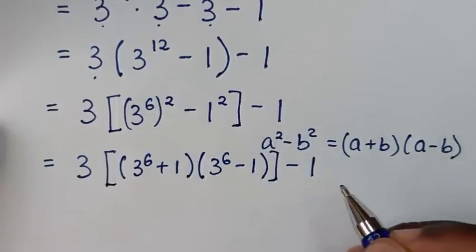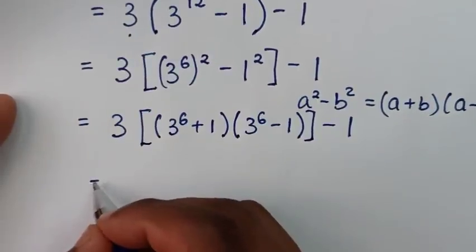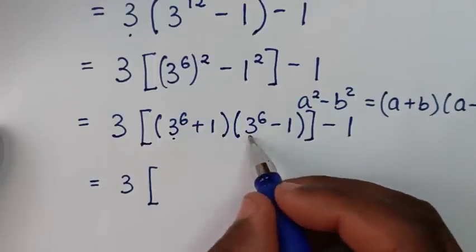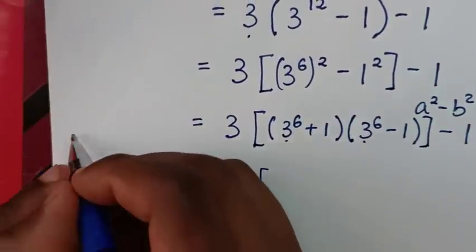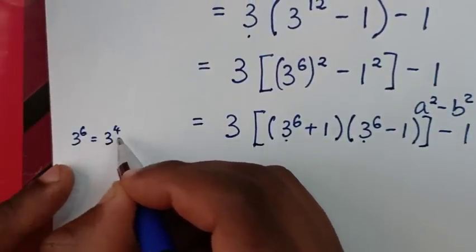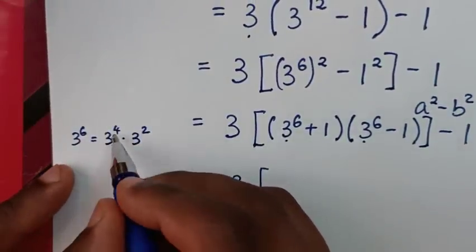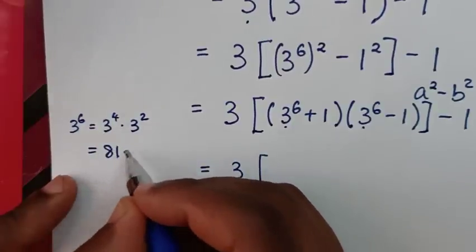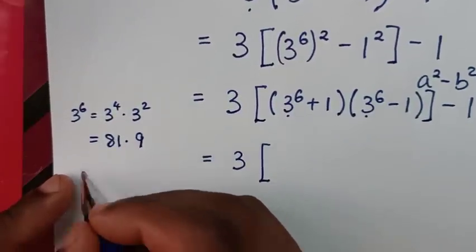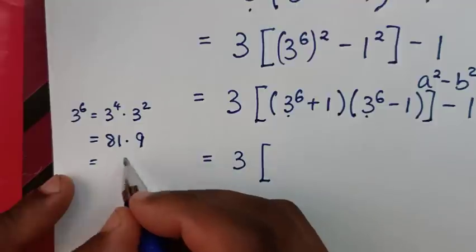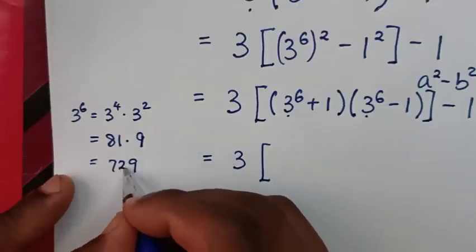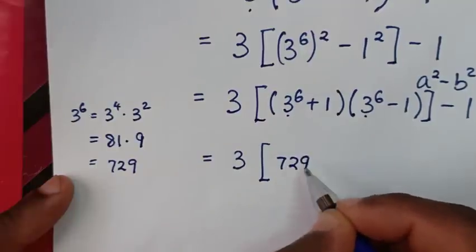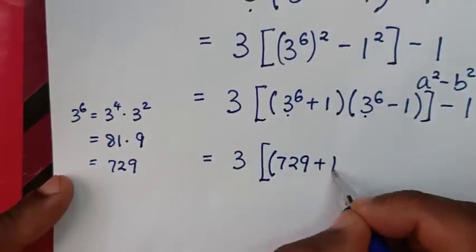Then in the next step it will be 3, then bracket — here 3 power of 6. Now 3 power of 6 is the same as 3 power of 4 times 3 power of 2, because power of 4 plus power of 2 is power of 6. Then it will be equal to: 3 power of 4 is 81, times 3 power of 2 which is 9. So 81 times 9 is 729. Therefore 3 power of 6 is 729, bracket, plus 1.